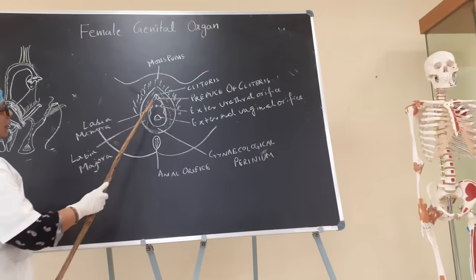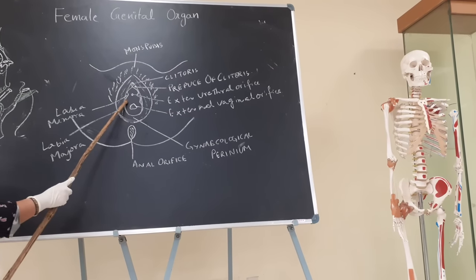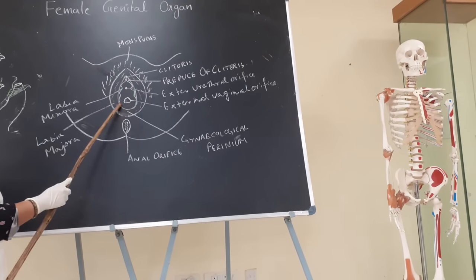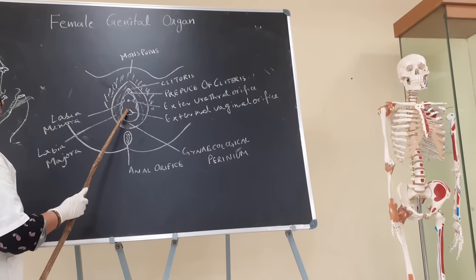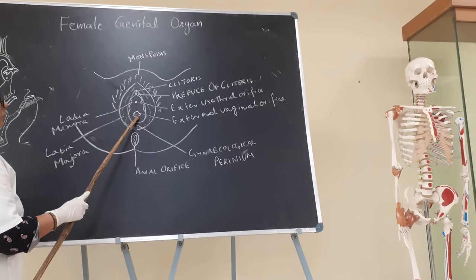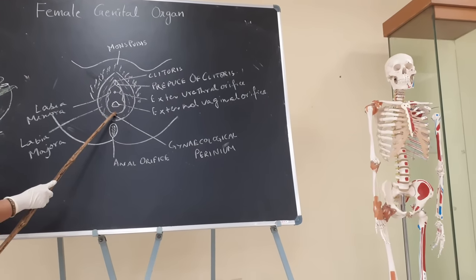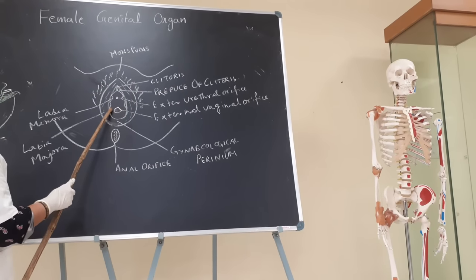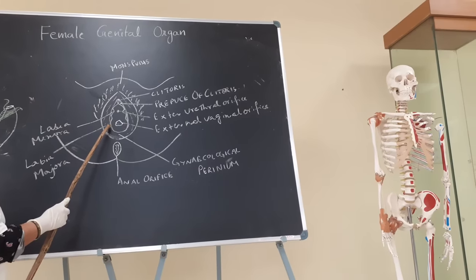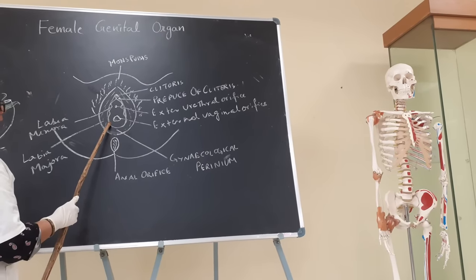Coming to the next part, that is the labia minora — a thin skin fold which is fatless. Between the two labia majora, the space is called the vestibule. The vestibule contains the opening of the external urethral orifice and the external vaginal orifice. It is covered by a fibrous membrane called the hymen. Between the hymen and the labia minora, the openings of the greater and lesser vulvo-vestibular glands are present.